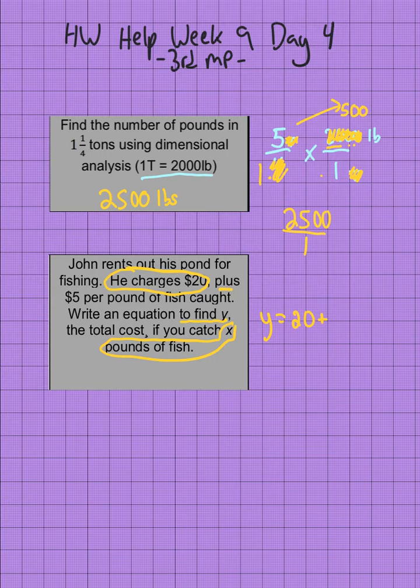Plus $5 per pound. Remember, X is how many pounds, and it's $5 per pound, so that's 5 times X. That is our equation. Y is the total cost: $20 plus 5 times however many pounds of fish you catch.